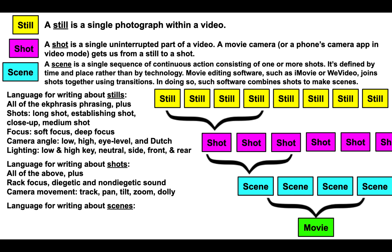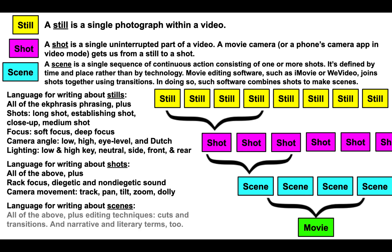When we move from shots to scenes, we include all of our ekphrastic phrasing — we use all of our still writing, all of our shot writing — and then we start to include editing techniques, like what particular kind of cut and transition takes us from shot to shot. We can also use our narrative and literary terms, which we'll be getting into a little bit more when we write about entire movies and scenes within movies.